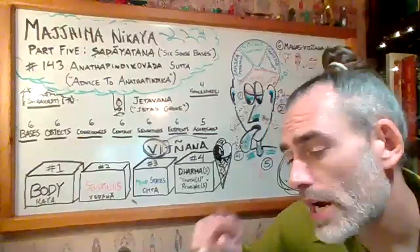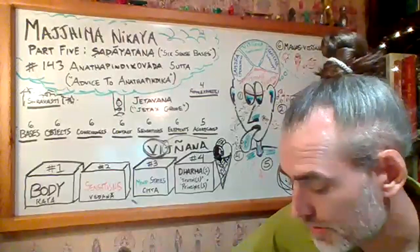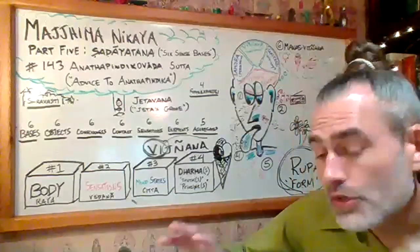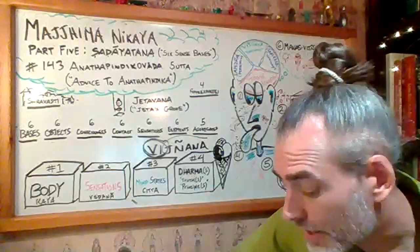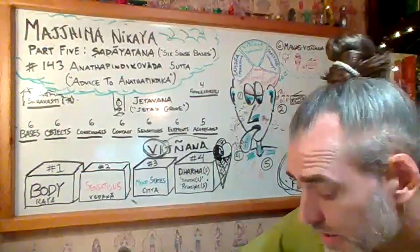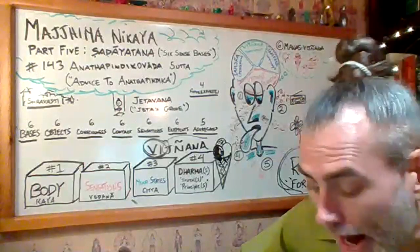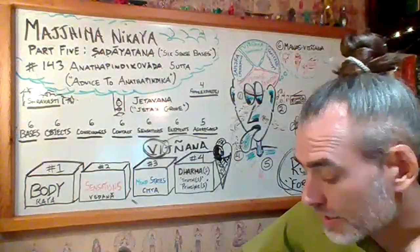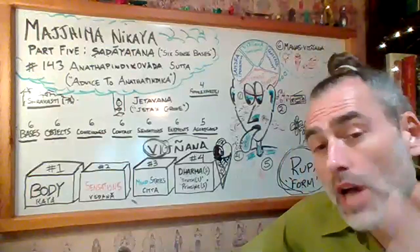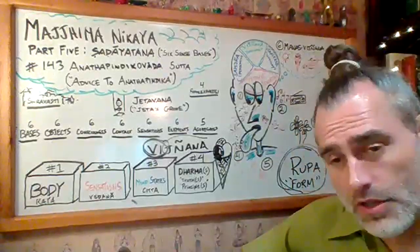'Householder, you should train thus: I will not cling to the earth element, the water element, the fire element, the air element, the space element, or the consciousness element, and my consciousness will not be dependent on the consciousness element. Thus you should train. I will not cling to material form, sensations, perceptions, conditioned formations, or consciousness, and my consciousness will not be dependent on consciousness. Thus you should train.'